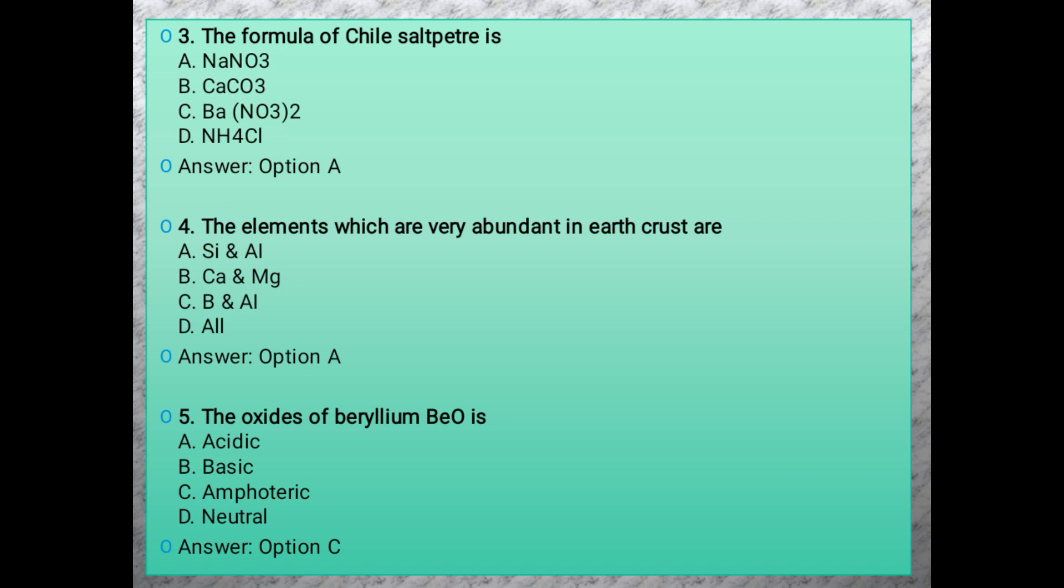Question 4: The elements which are very abundant in earth's crust are silicon and aluminum. First is oxygen, second is silicon, and third is aluminum. So the abundant elements are Si and Al.